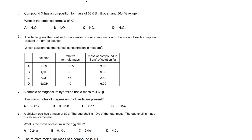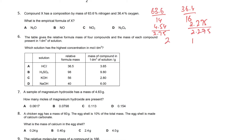To find the empirical formula from percentage composition, we divide the percentage by mass by the Ar to get moles. For nitrogen: 63.6/14 = 4.54, and for oxygen: 36.4/16 = 2.275. Dividing by the smallest gives a ratio of approximately 2:1, so the empirical formula is N2O.